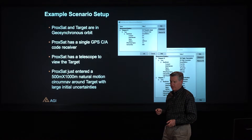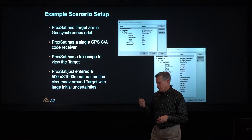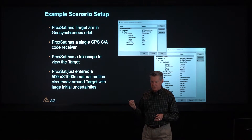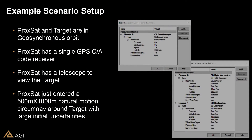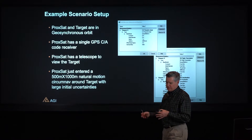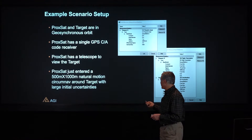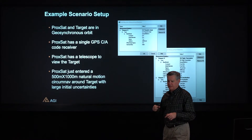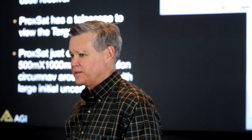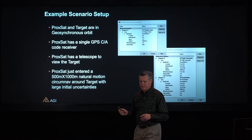I'll walk through a quick example. We have a target satellite flying in a circular geostationary orbit, and a proximity operation satellite that will fly up and perform a circumnav orbit about the target. The proximity operation satellite has a GPS receiver on board processing pseudorange measurements, and at the same time its optical instrument tracks the target satellite. The only tracking on the target satellite is this satellite-to-satellite optical measurement.